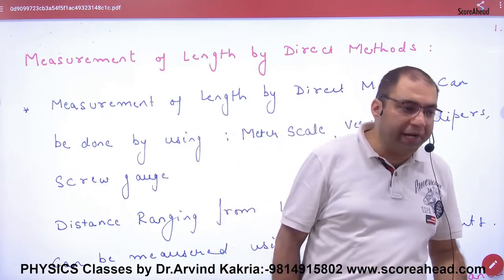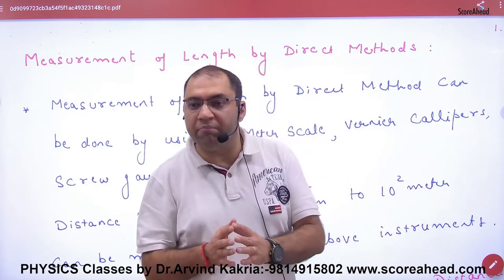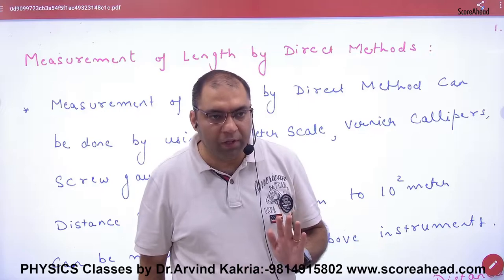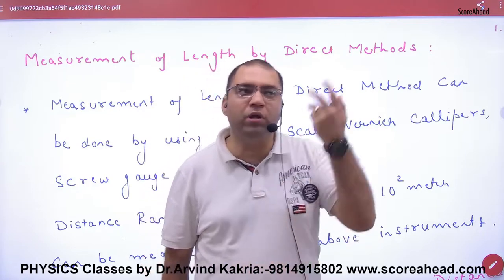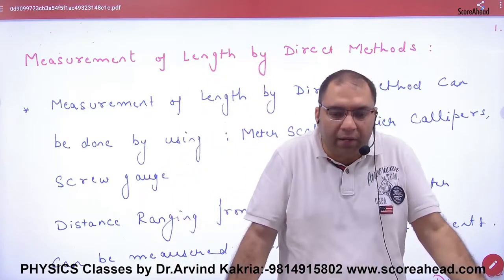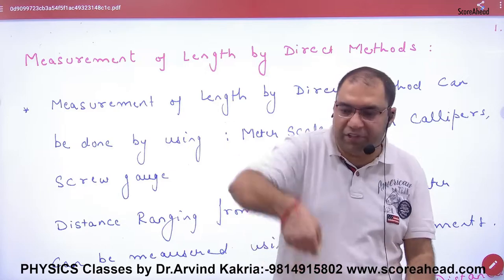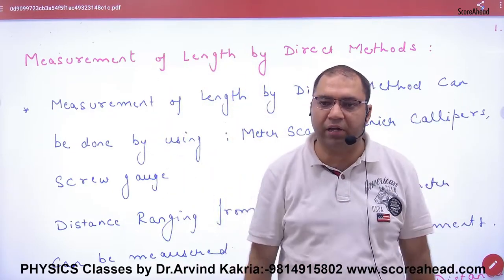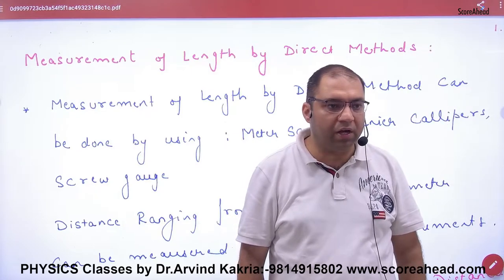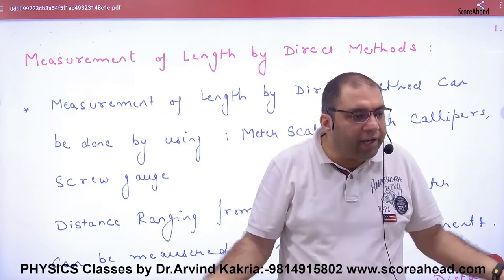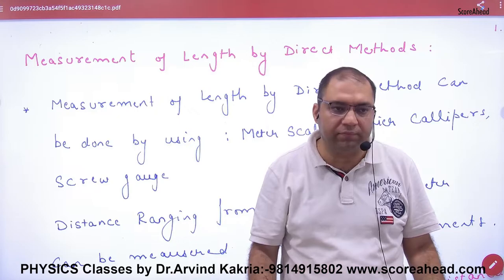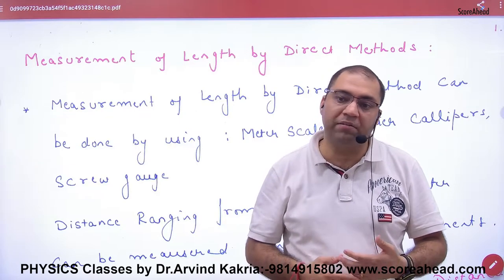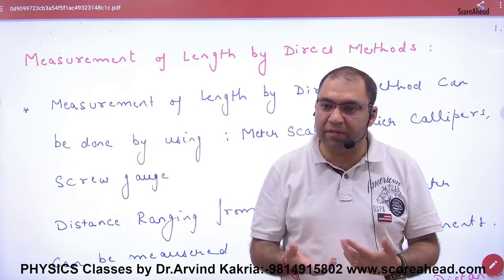For the radius of an atom, there is no meter scale — there is no machine for that. Similarly, if I want to measure the distance to the moon, or the distance to the star Alpha Centauri, you cannot just put a meter scale there. There is no direct method. But we do have methods by which we can calculate those distances.